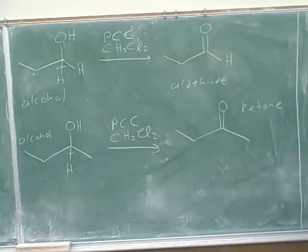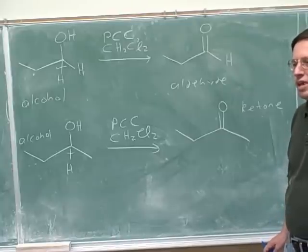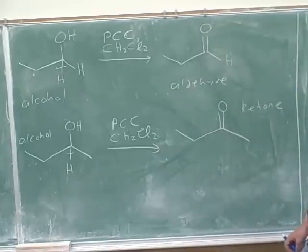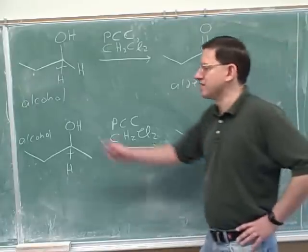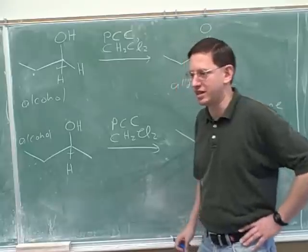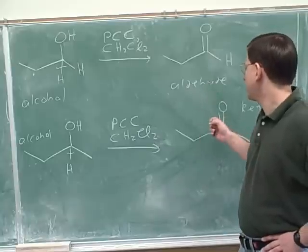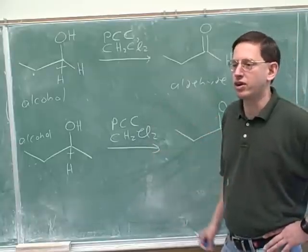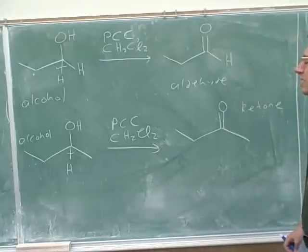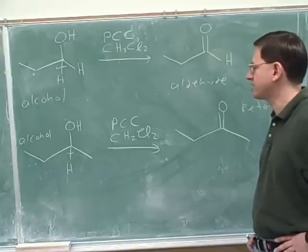Why is this important? Well, this could be useful on a synthesis problem. Suppose you're doing a synthesis problem and you notice that the final product is an aldehyde or a ketone. You could say to yourself, maybe one of my intermediates is an alcohol — I need to make an alcohol so that I can oxidize it. That would be a retrosynthesis idea. At this point in the course, the only way you know to make aldehydes and ketones is by oxidizing alcohols, so if you see the final product is an aldehyde or a ketone, you know you're going to have to oxidize an alcohol.